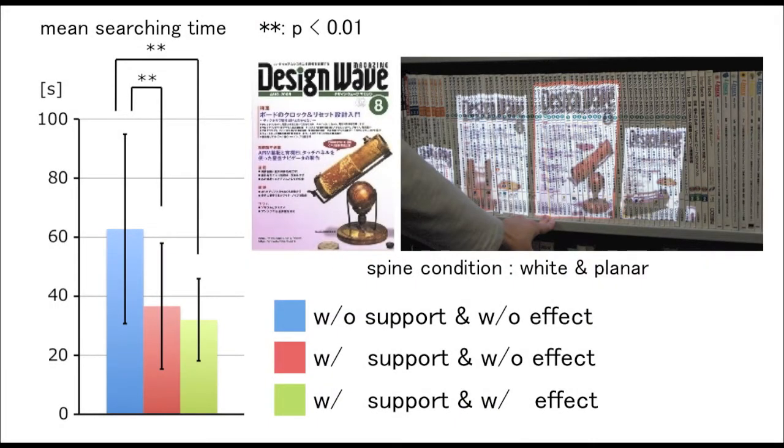A user study was carried out to validate the proposed book searching support technique. We measured the participants' book searching time in the bookshelf with and without the support. When the color of the spines was white, it was confirmed that the proposed support technique could improve the book searching task, irrespective of the continuous resizing effect when the spines were suitable for projection.